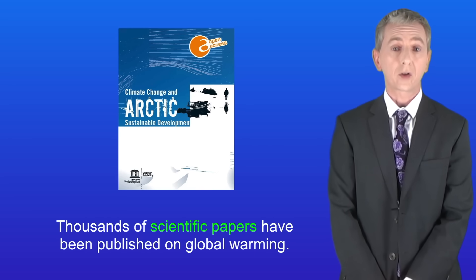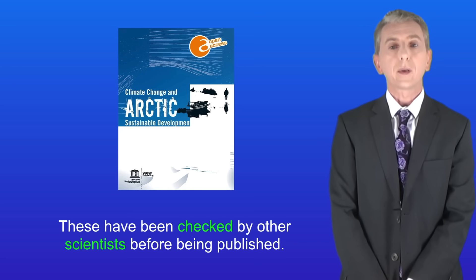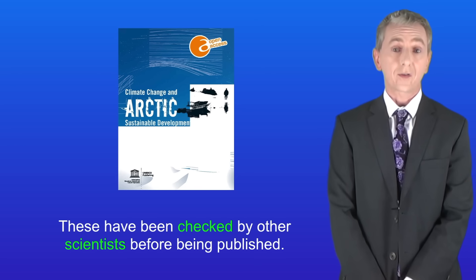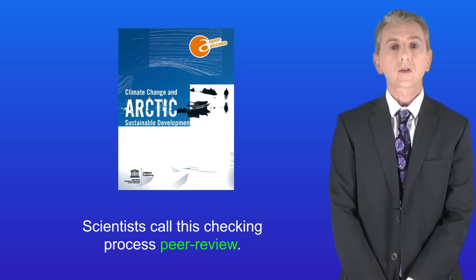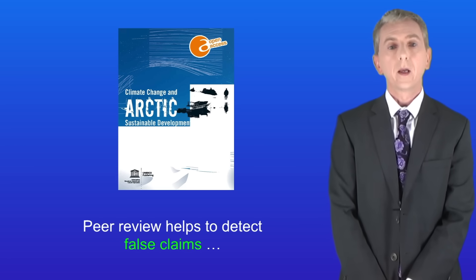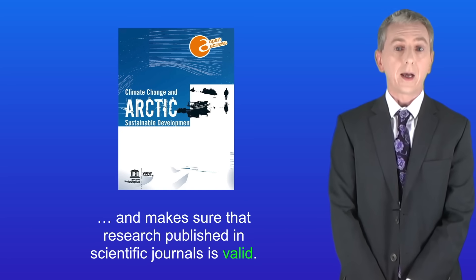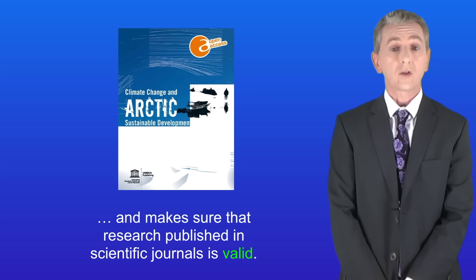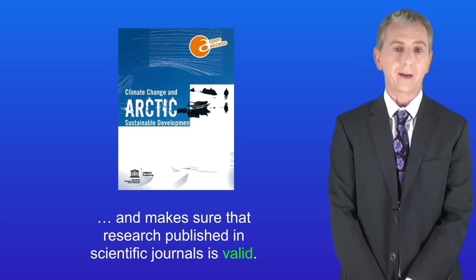Thousands of scientific papers have been published on global warming and these have been checked by other scientists before being published. Scientists call this checking process peer review. Peer review helps to detect false claims and makes sure that research published in scientific journals is valid.